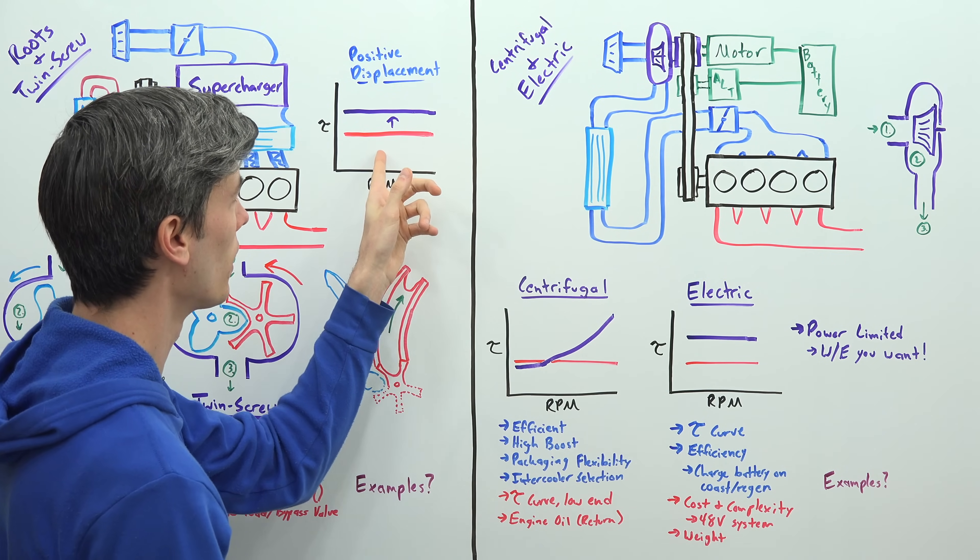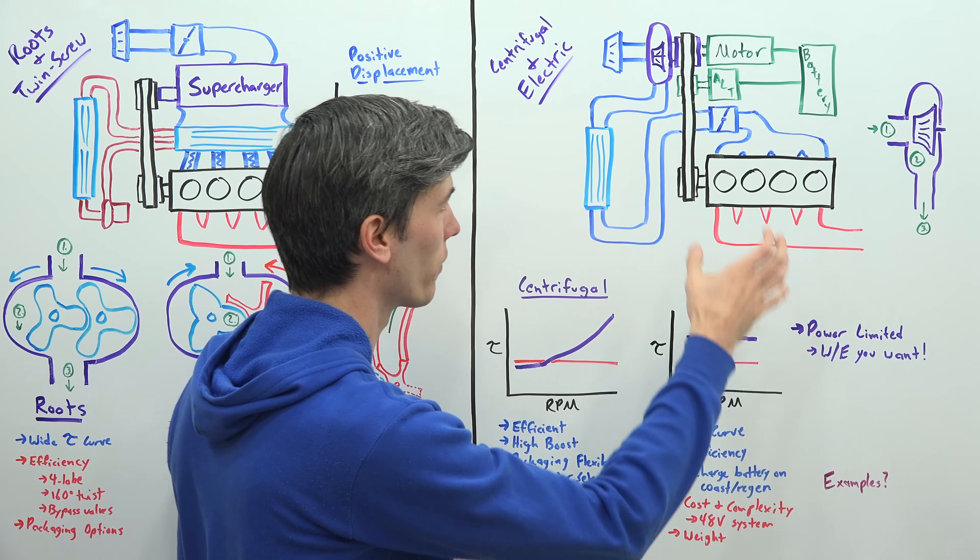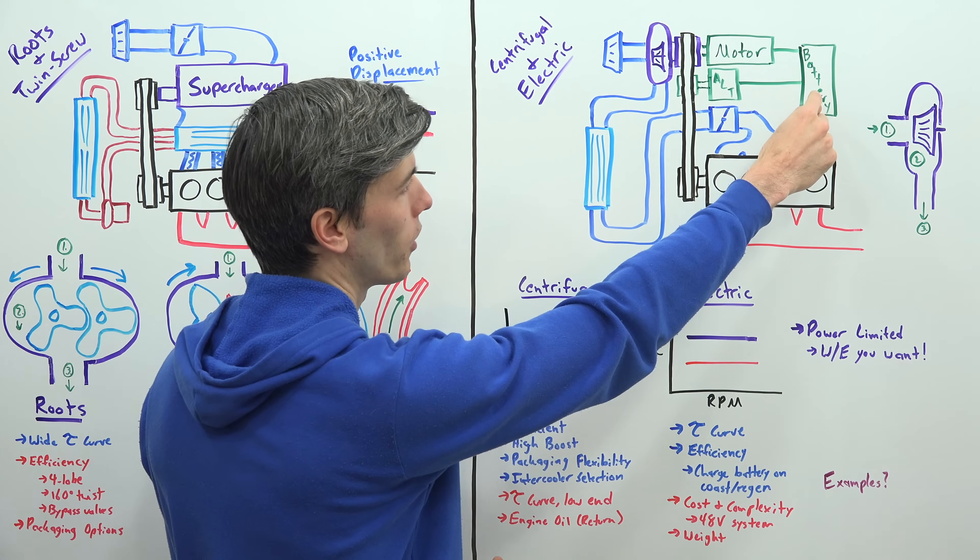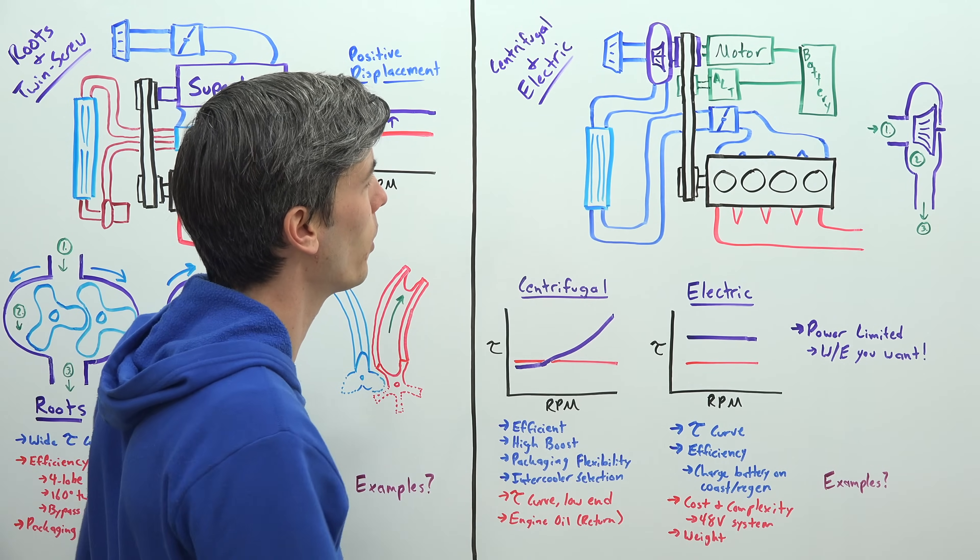But even still you're only going to reach your peak boost at peak RPM, so it really shifts your torque curve to the top end instead of benefiting the bottom end like you get with a positive displacement pump. Now if you're using an electric supercharger of this same style, well it doesn't matter what your engine RPM is - it simply matters how much energy do you have in your battery.